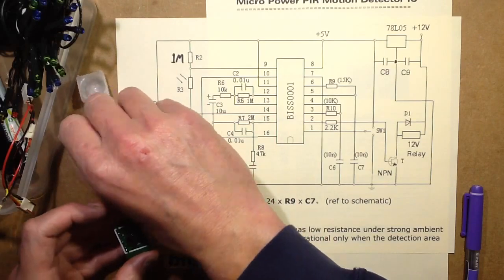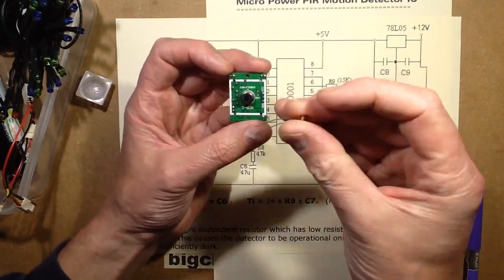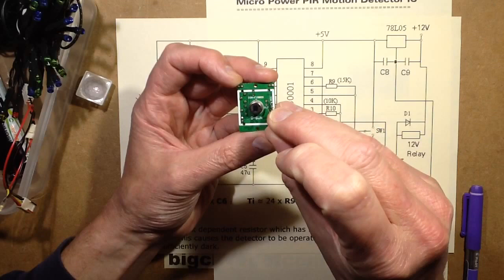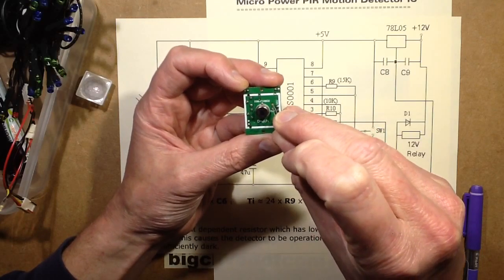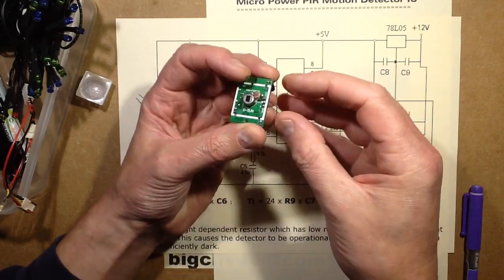So let's cut to the chase and solder this in. The two pads are clear and ready to accept the LDR so I'm just going to shove that down like that.